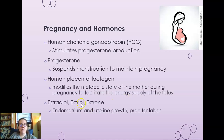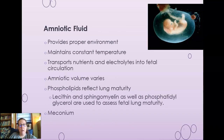There are three forms of estrogens associated with pregnancy: estradiol, estriol, and estrone — all involved in endometrium and uterine growth and preparation for labor. Labor begins initiating when progesterone levels start to drop and estrone levels rise. Amniotic fluid provides a proper environment around the fetus, maintains constant temperature, and transports nutrients and electrolytes to fetal circulation. The baby constantly swallows amniotic fluid and urinates it back out.